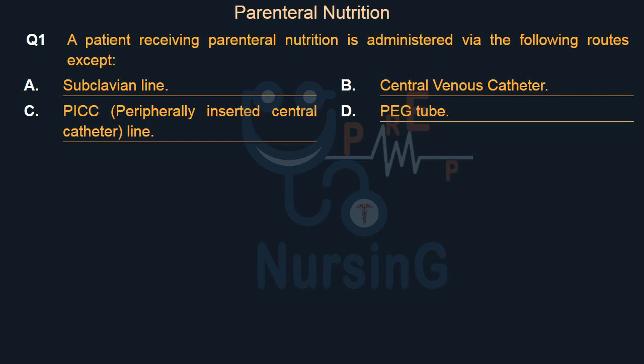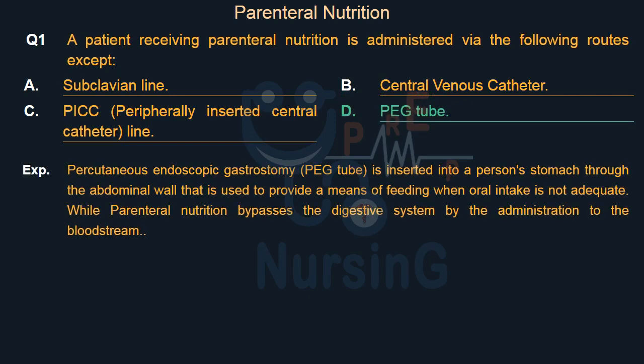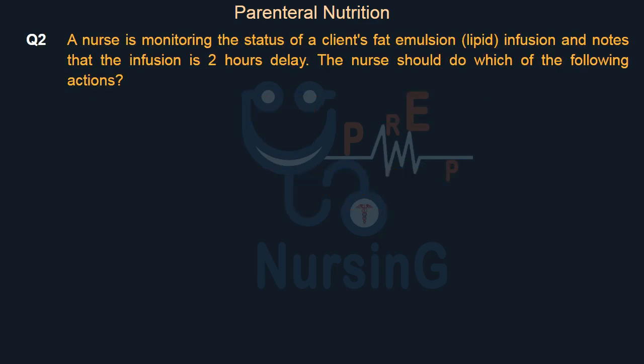Right answer is Option D: PEG Tube — Percutaneous Endoscopic Gastrostomy. A PEG tube is inserted into a person's stomach through the abdominal wall and is used to provide a means of feeding when oral intake is not adequate, while parenteral nutrition bypasses the digestive system by administration directly to the bloodstream.